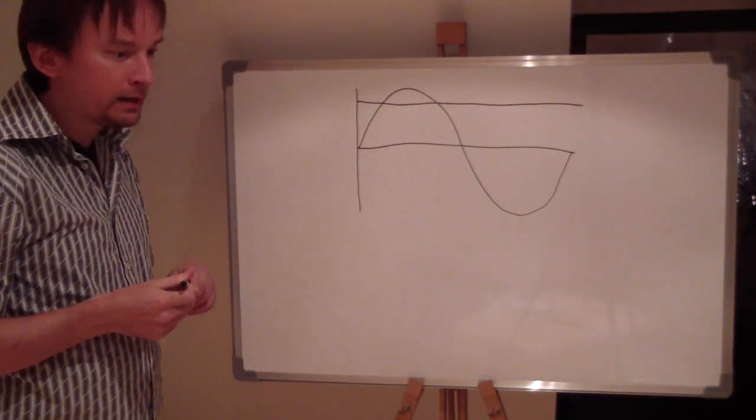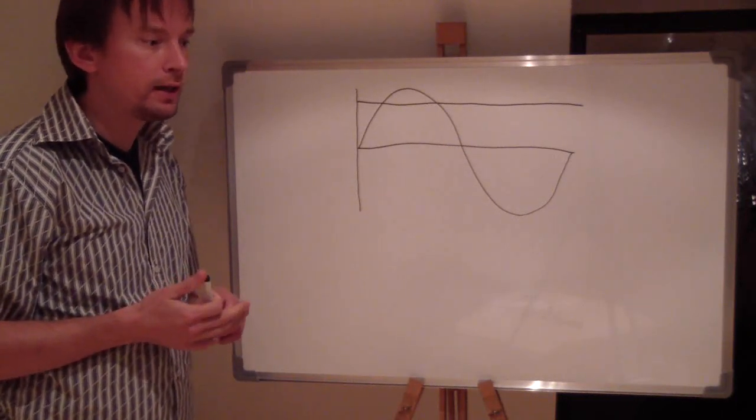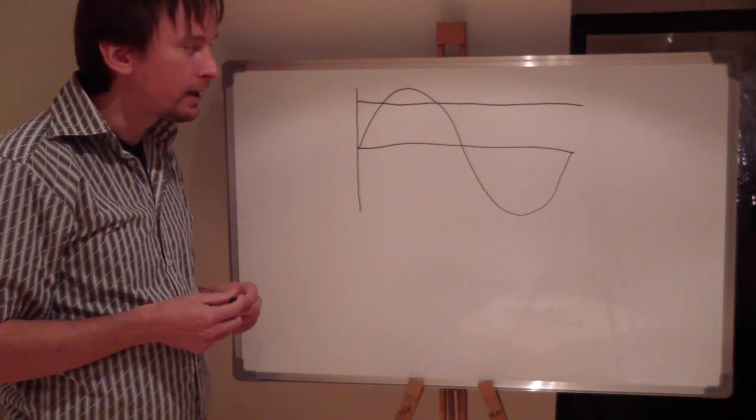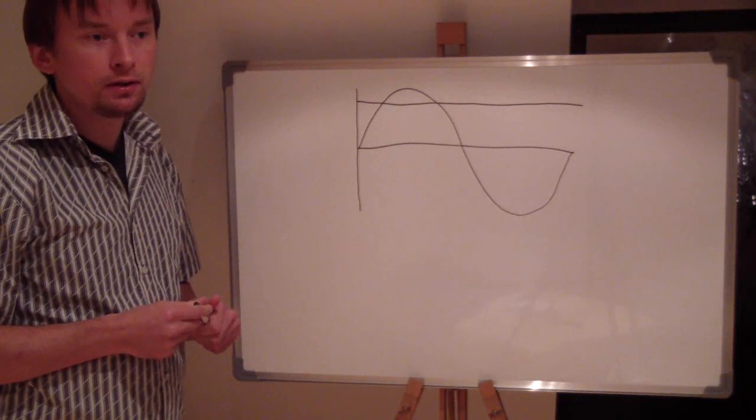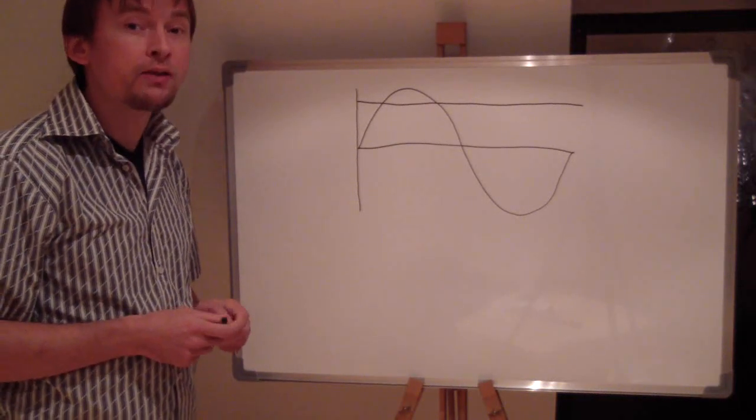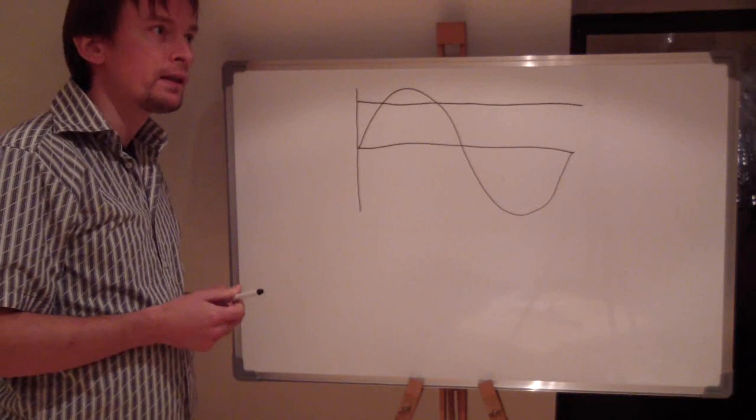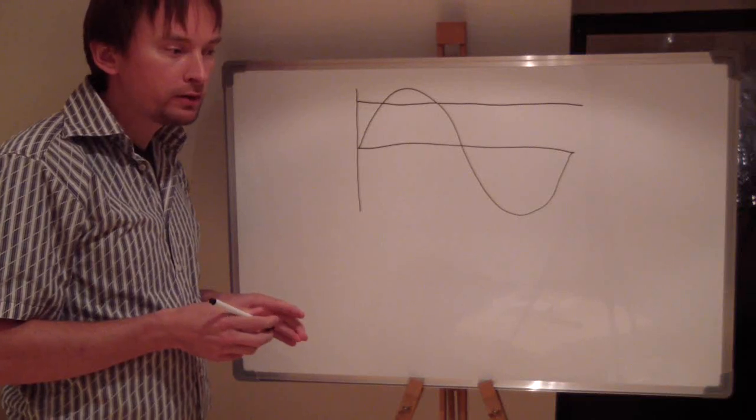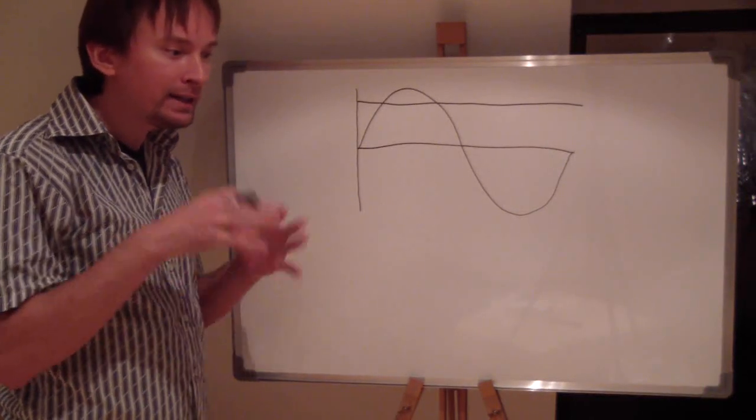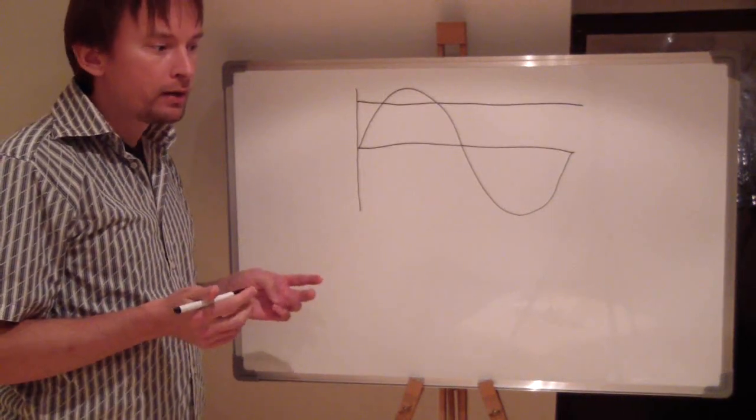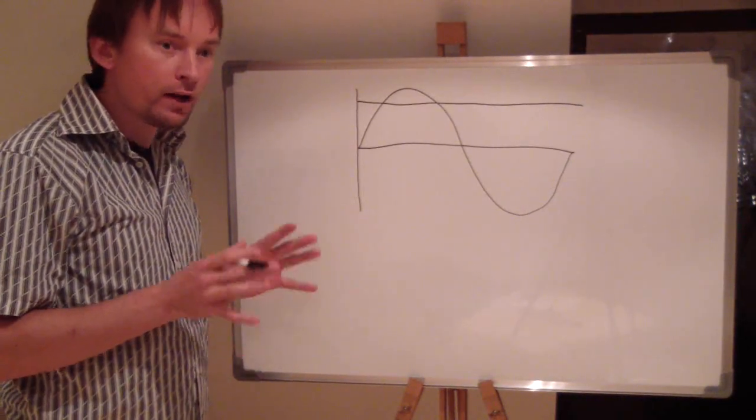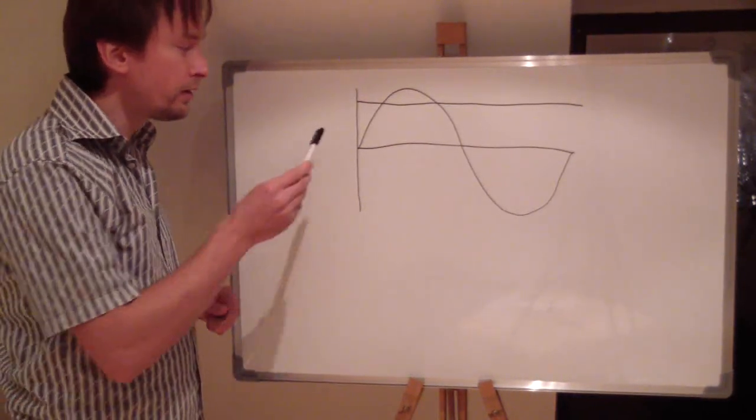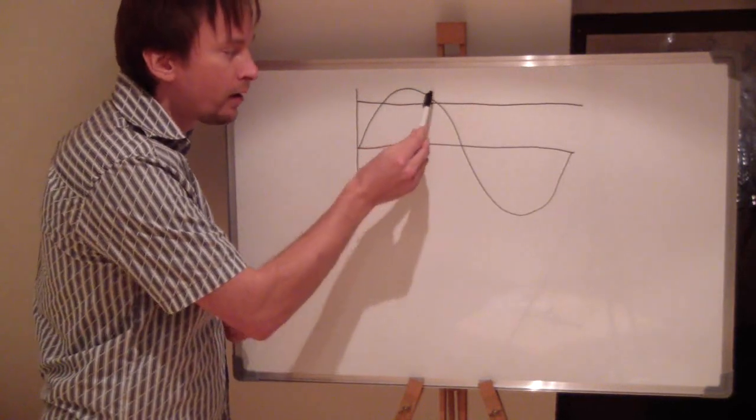So in the beginning of electricity, there were only batteries and batteries generate direct current. So when the first alternating current came, people wanted to be able to compare these two. They wanted to say, okay, let's say a light bulb powered with 10 volts direct current. We want to be exactly as brightly lit as a light bulb powered by 10 volts of alternating current. And there is a problem in this because alternating current changes its power all the time.